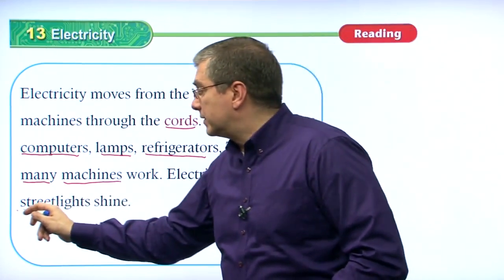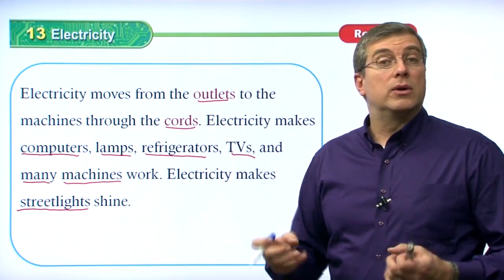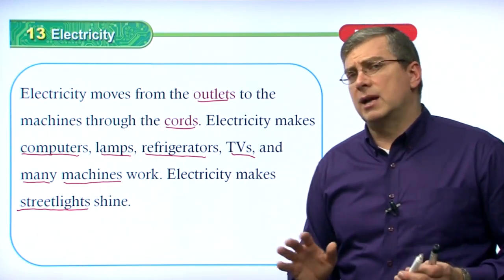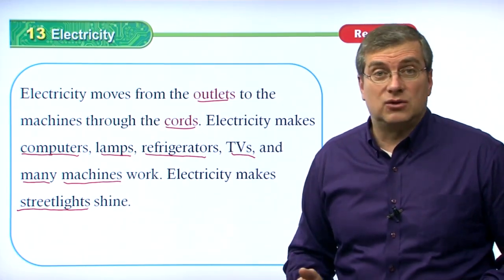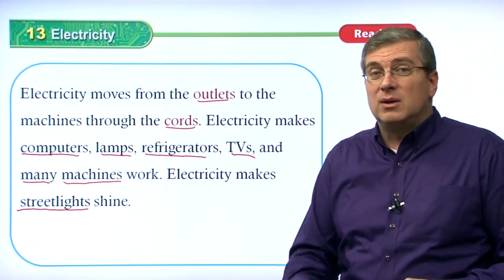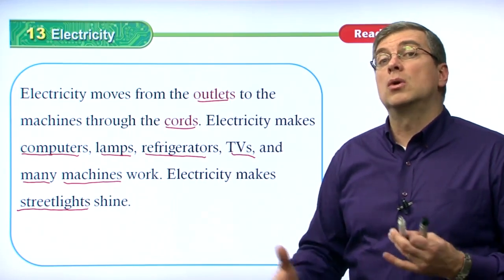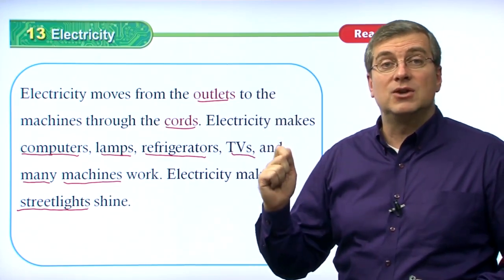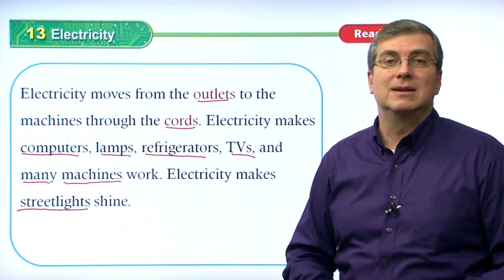Electricity makes street lights shine. Think about how people didn't have electricity 150 years ago. When it was night, it was dark — maybe you could light a fire or a candle, but it gives off smoke, it's not convenient. Imagine how the world changed once electricity became available. All of a sudden, people could just flip a switch — turn on the light. Now we have light, we have energy, we can do many things at night because of electricity.